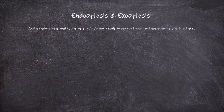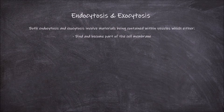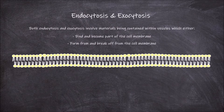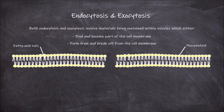Both endocytosis and exocytosis involve materials being contained within vesicles. These vesicles either bind and become part of the cell membrane, or form from and break off from the cell membrane. This is possible because of the fluid and flexible nature of the cell membrane, which is made up of phospholipids held together by weak associations of the hydrophobic fatty acid tails, creating a bilayer. These weak associations allow for the membrane to be broken and reformed, allowing endocytosis and exocytosis to occur.